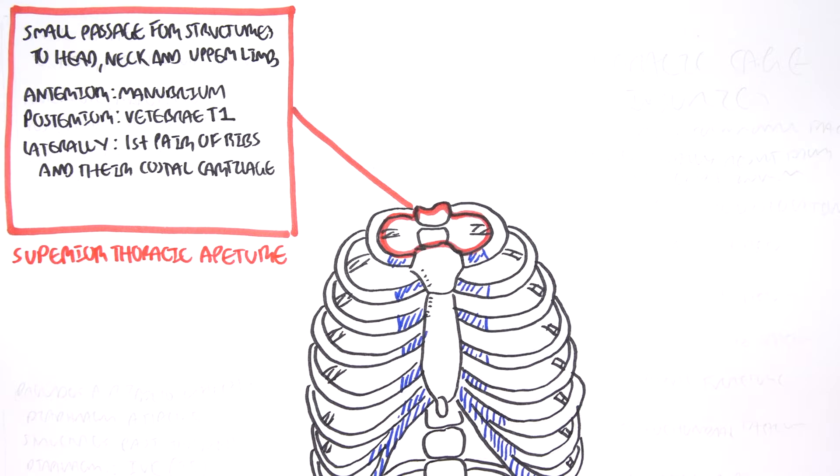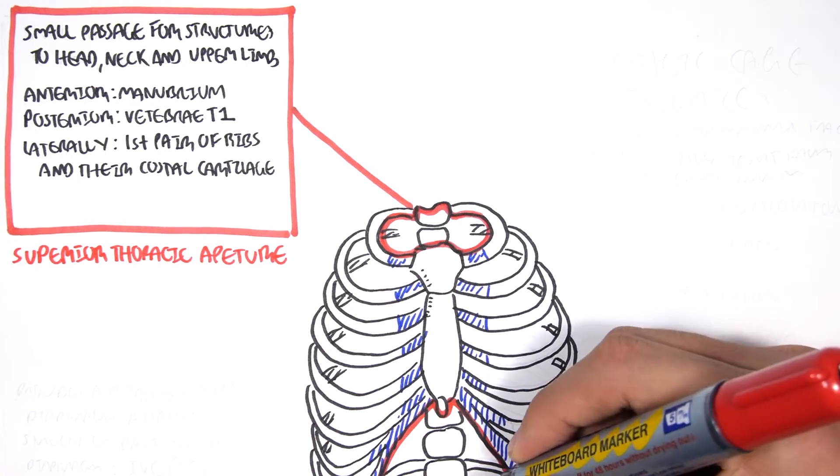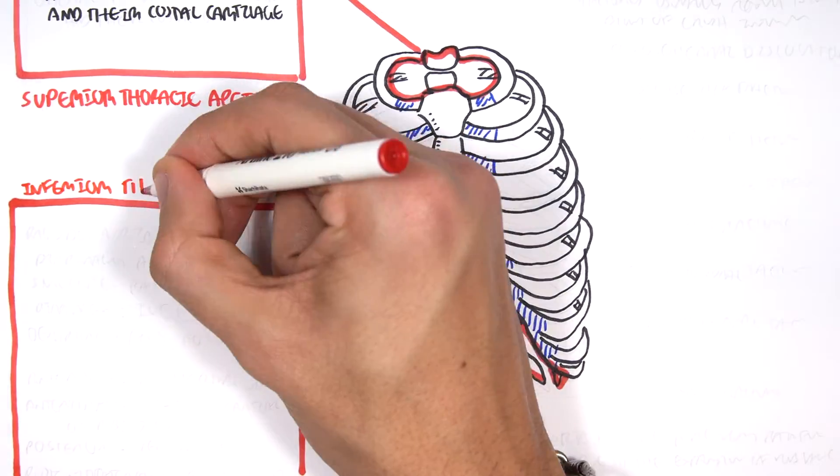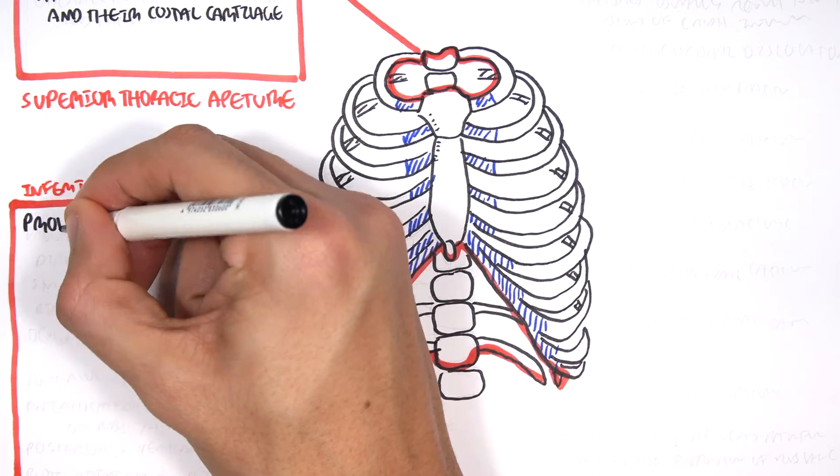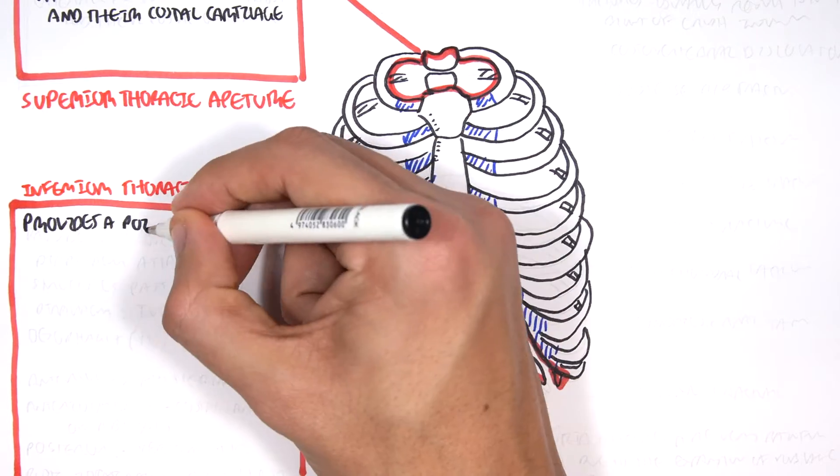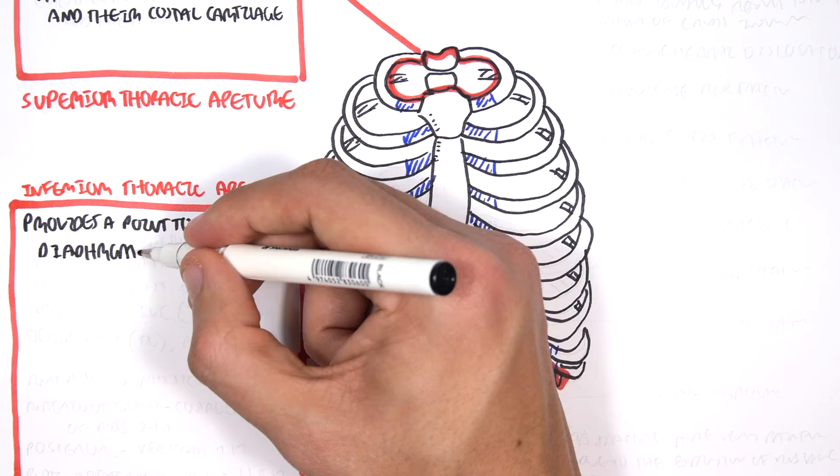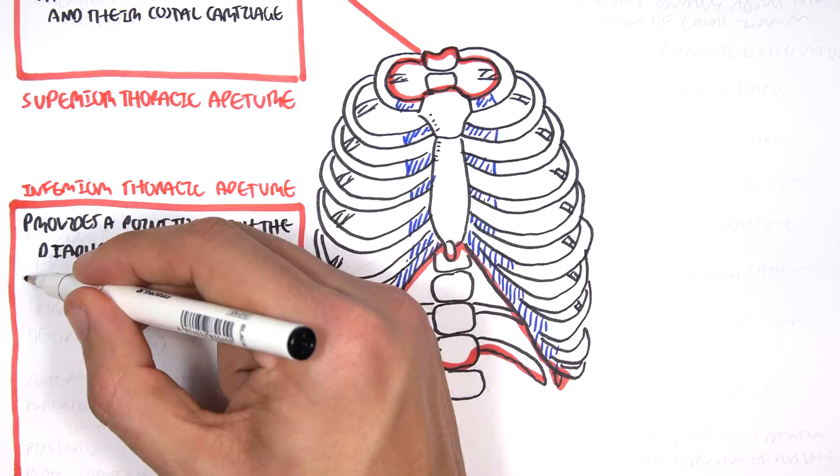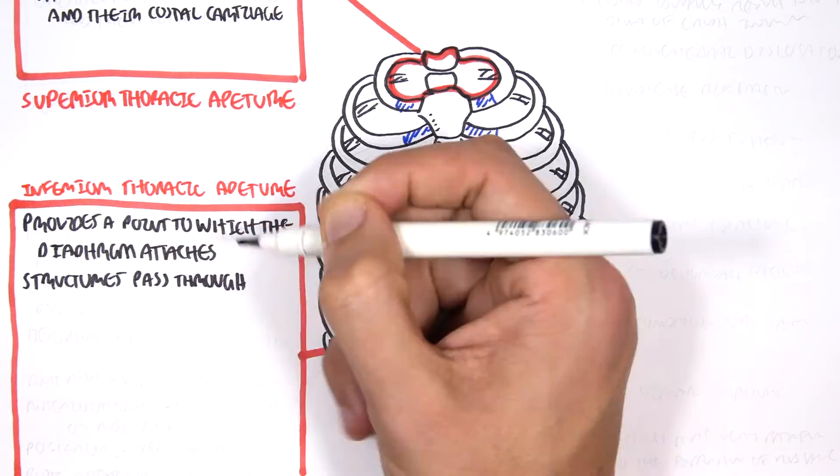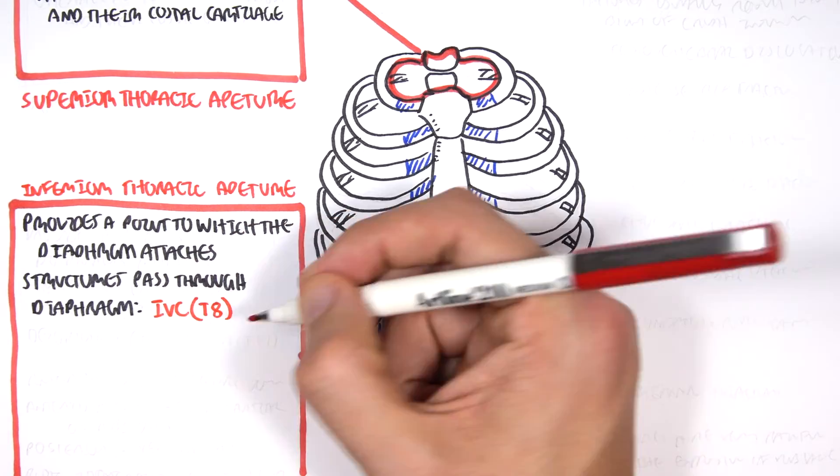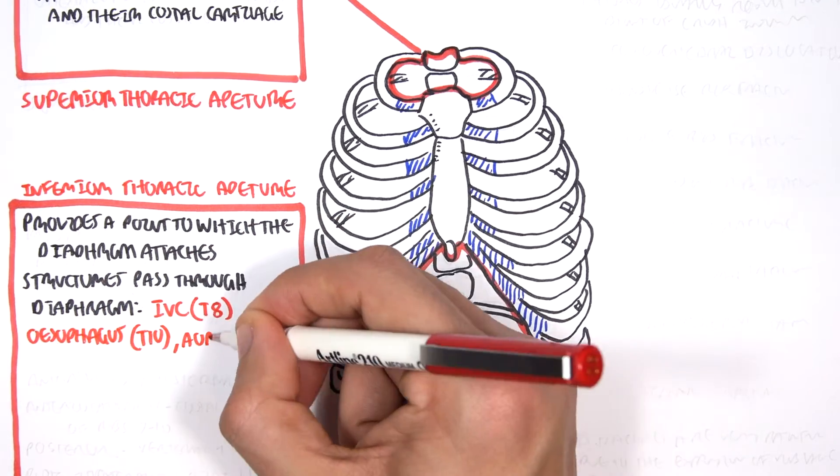So that was the superior thoracic aperture. Then we have the inferior thoracic aperture. The inferior thoracic aperture provides a point to which the diaphragm attaches. Some important structures pass through the diaphragm. These are the inferior vena cava at T8, the esophagus at T10, and the abdominal aorta at T12.